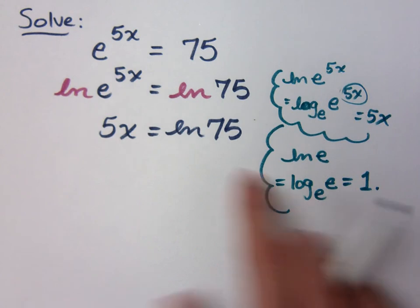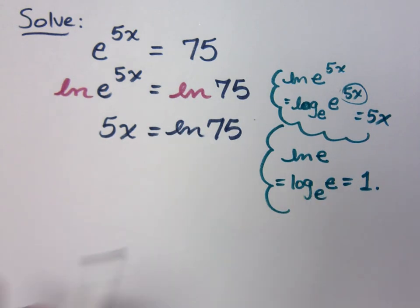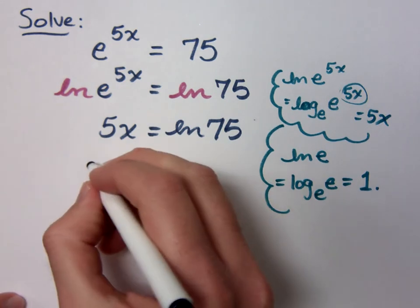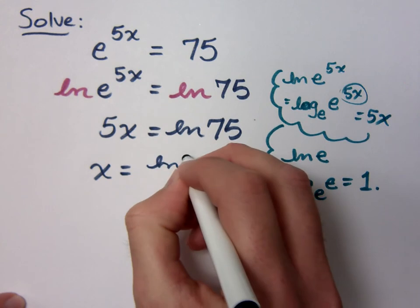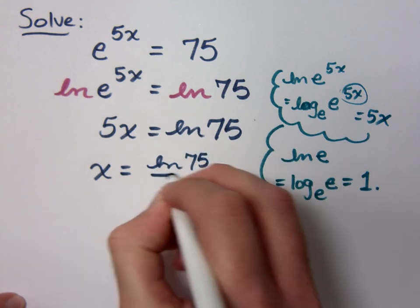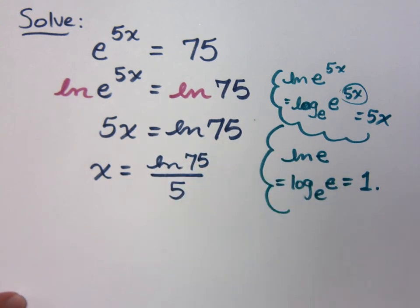Well, now that I have 5x equals natural log of 75, how do I finish that? Divide both sides by 5, so what does x equal? Natural log of 75 divided by 5.